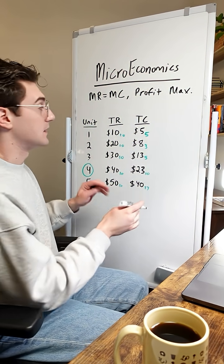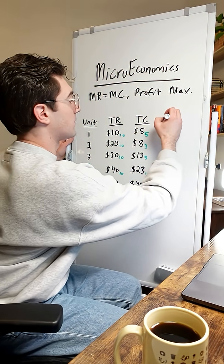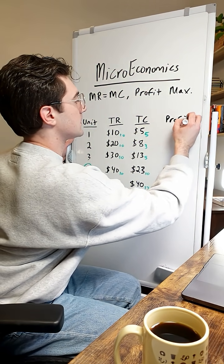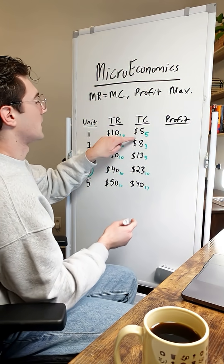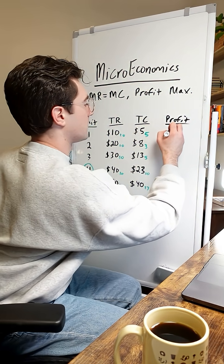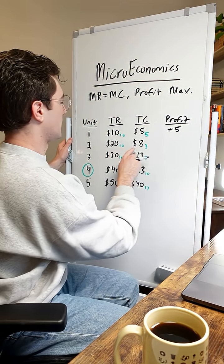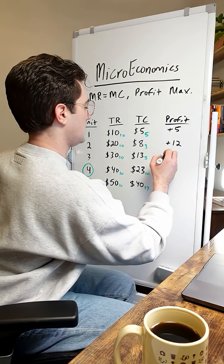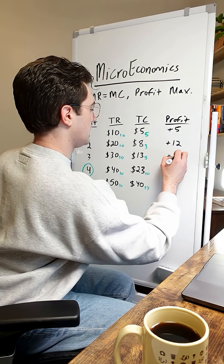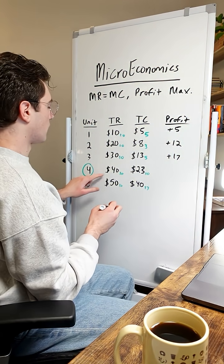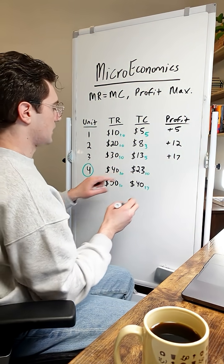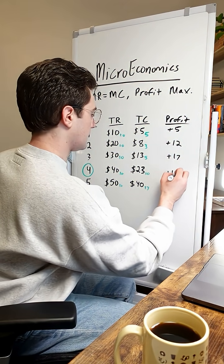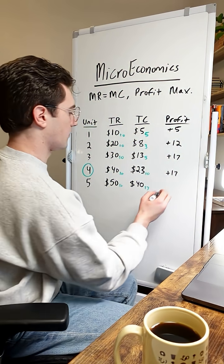From here, I want to test what our profit equals at each of these units. So: $10 minus $5 is $5. $20 minus $8 is $12. Minus $13 is $17. $40 minus $23 is also $17. And $50 minus $40 is $10.